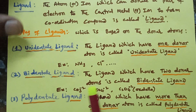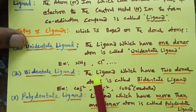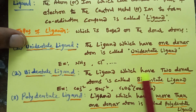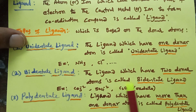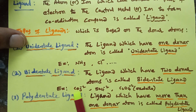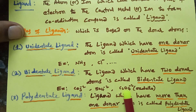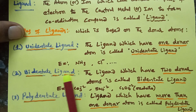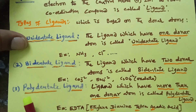The second type of ligand is the bidentate ligand. A ligand which has two donor atoms is called a bidentate ligand. Examples are carbonate ion, sulfonate ion, and oxalate ion — these all act as bidentate ligands.